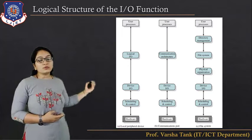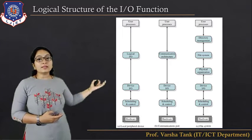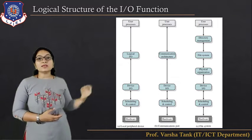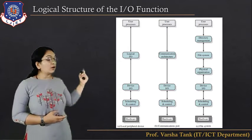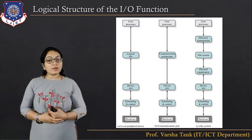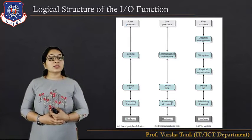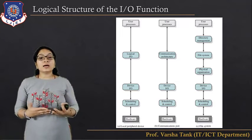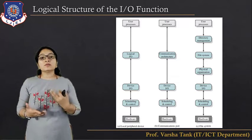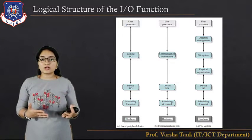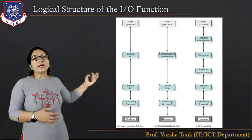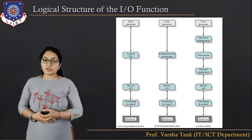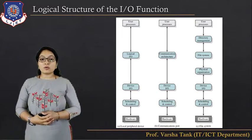For the file system, the scheduling IO and device IO layers are the same, but then we have physical organization — how data is stored and retrieved using physical and logical addresses — then the file system layer, and then directory management.